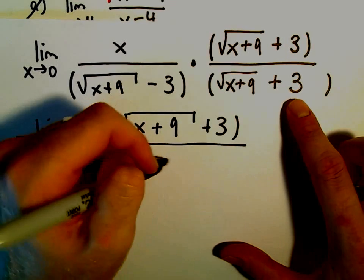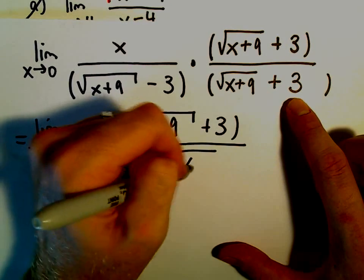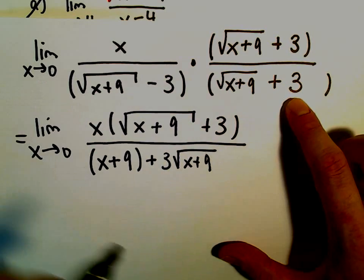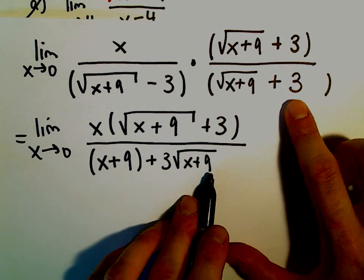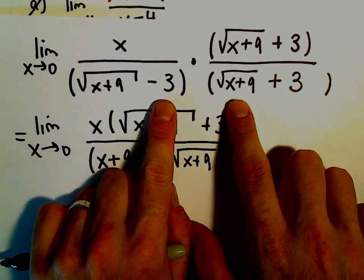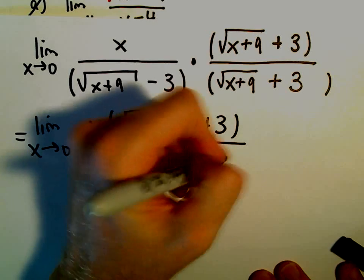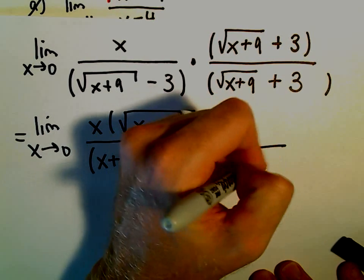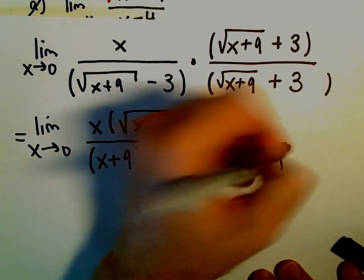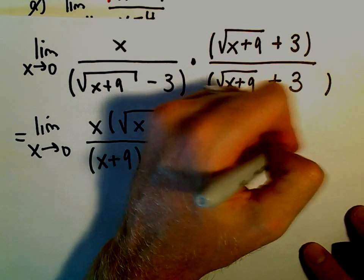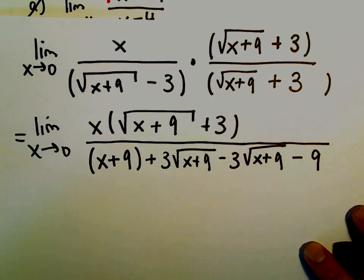The square root of x plus 9 times 3, that would give us 3 times the square root of x plus 9. And then we've got negative 3 times the square root of x plus 9. So we'll get negative 3 times the square root of x plus 9. Then we've got negative 3 and positive 3, which is going to give us negative 9.